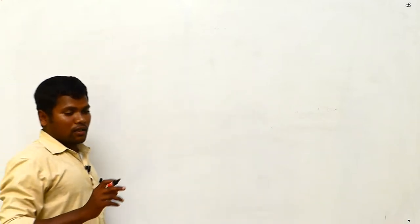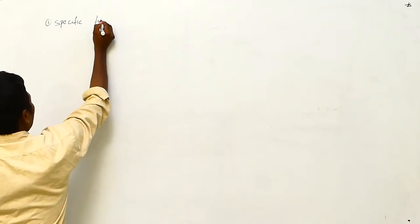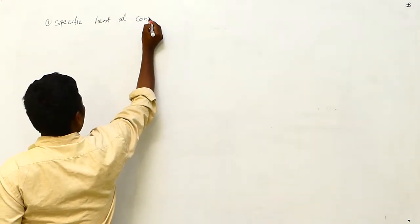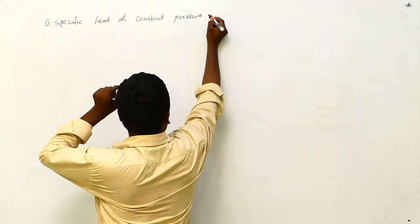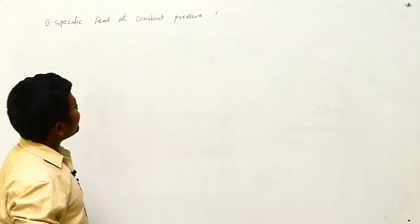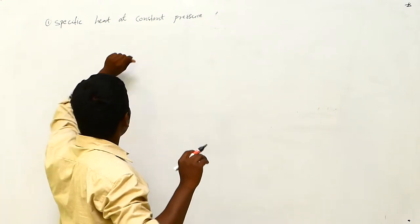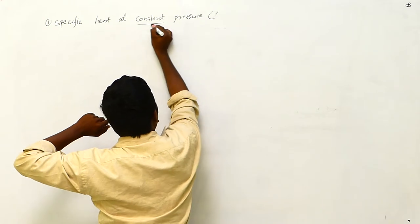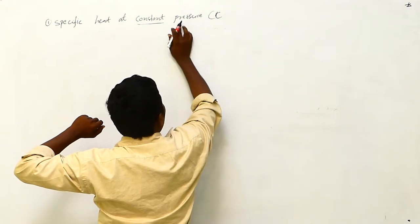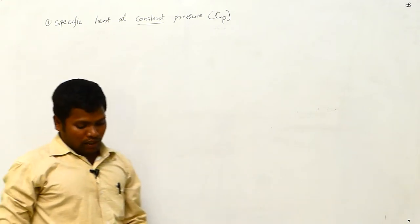As I said in the previous class, there are two constants. The first one is specific heat at constant pressure. Specific heat is denoted with the letter C. Since this is at constant pressure, we write it as C_P. So what is specific heat at constant pressure? What is the definition?